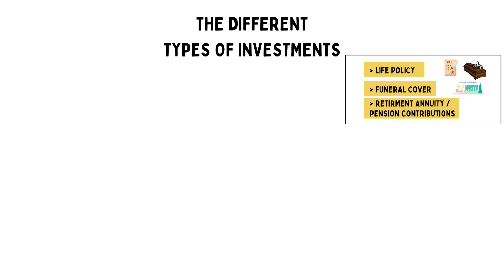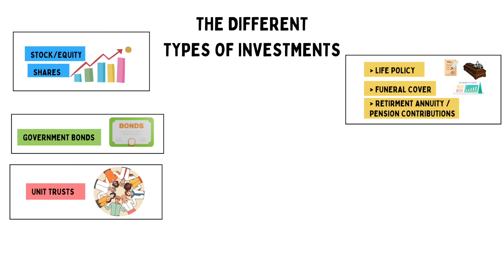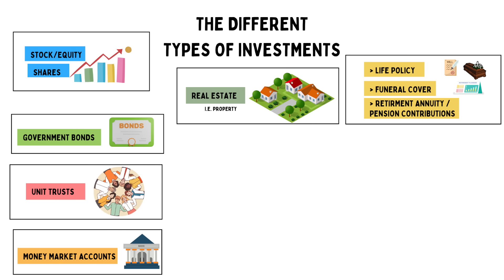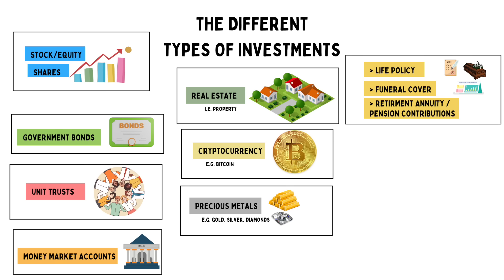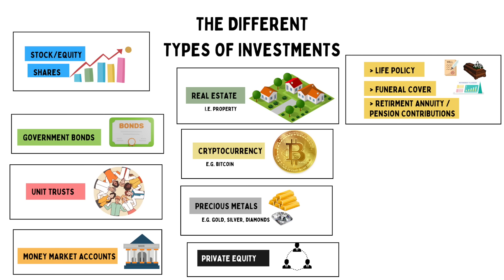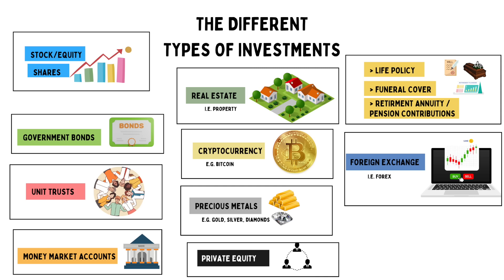Now let's get into the different types of investing. Besides retirement annuities, life policies, and funeral policies, the other types of investments include: stocks and equities, government bonds, unit trusts, money market instruments, real estate, cryptocurrency such as Bitcoin, precious metals such as gold, silver, and diamonds, private equity — investing in private unlisted companies — foreign exchange (forex), and lastly, collectibles.